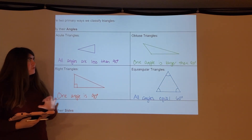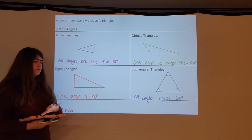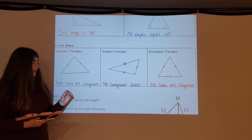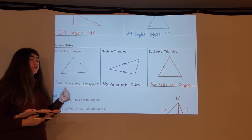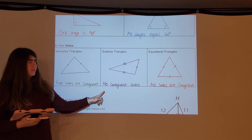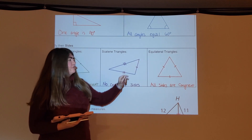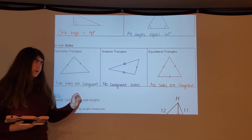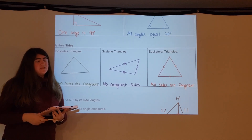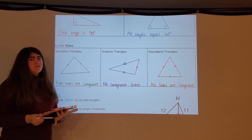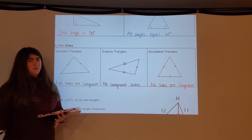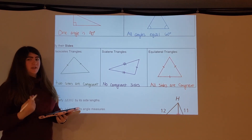Those are all the classifications by angle. Now we're going to look at classifications by sides. The isosceles triangle has two congruent sides. Scalene triangles have no congruent sides. And equilateral triangles have all sides congruent. Notably, equilateral and equiangular triangles happen to be the same — if you have an equilateral triangle, it's also equiangular, and vice versa.